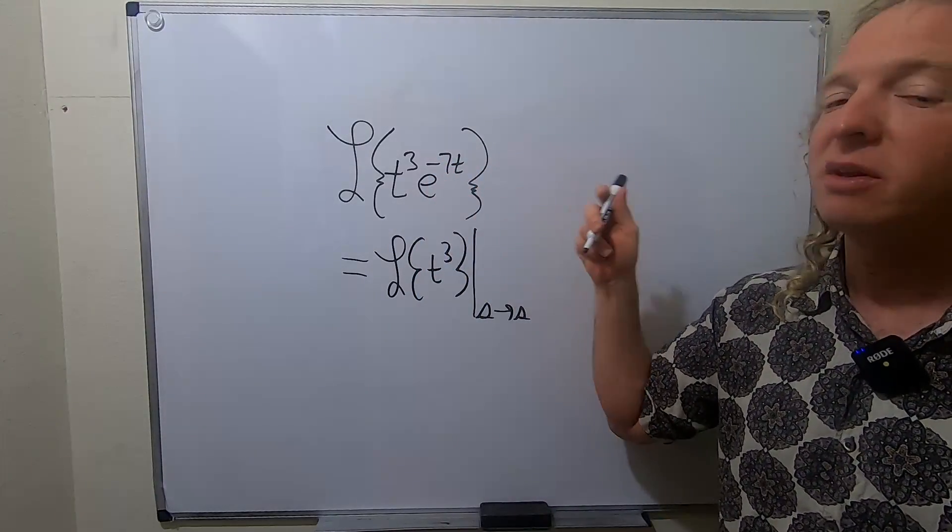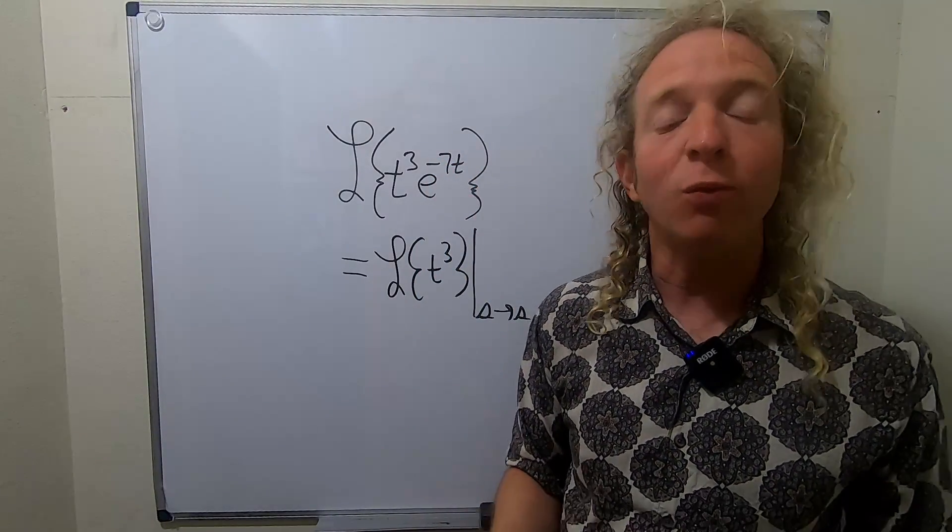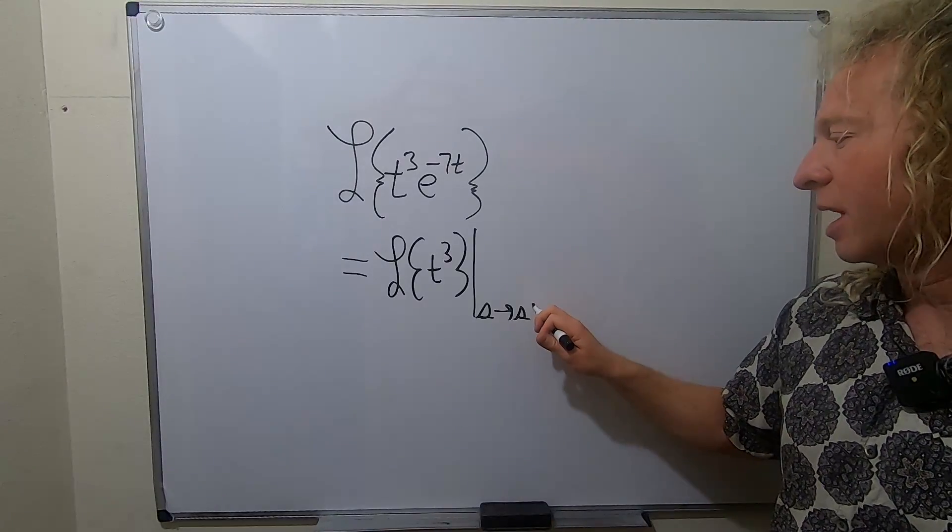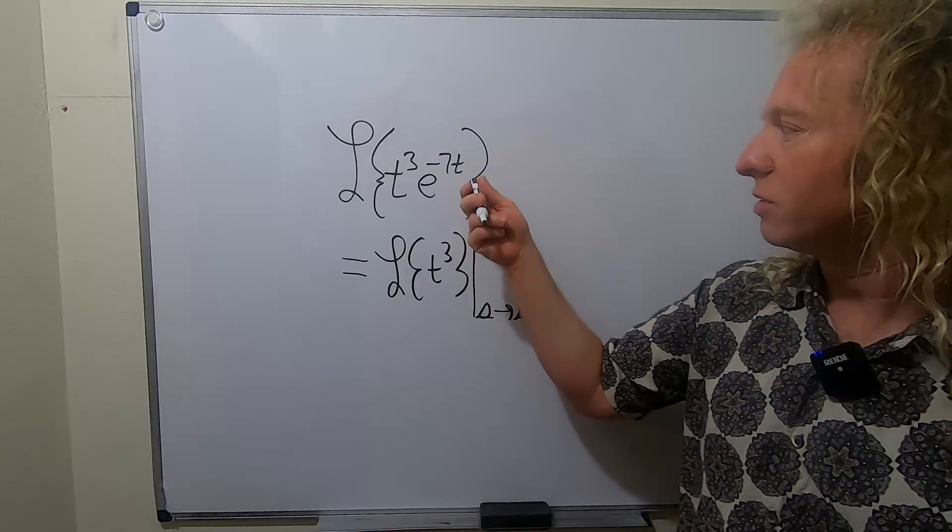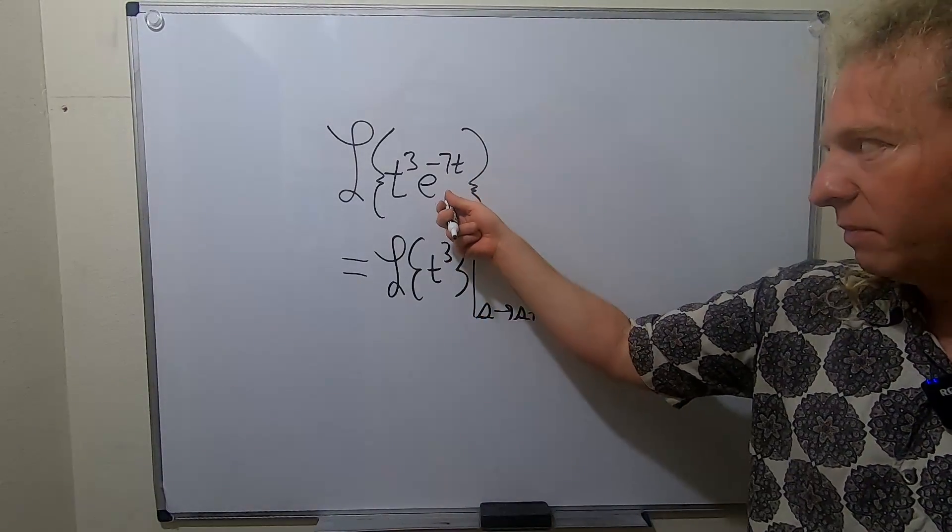So here there's a negative 7, so s minus negative 7 will be plus 7. So this is s plus 7. So the e becomes a shift.